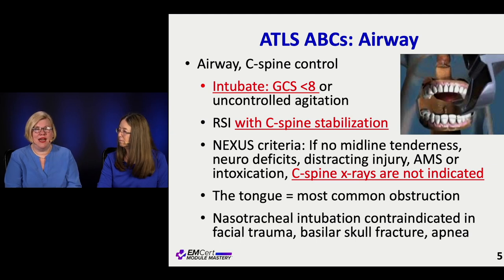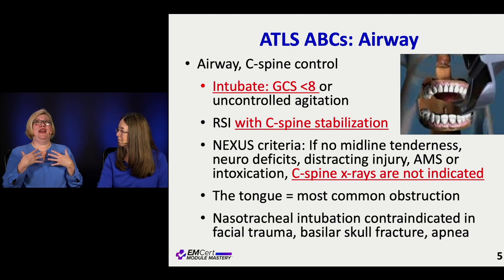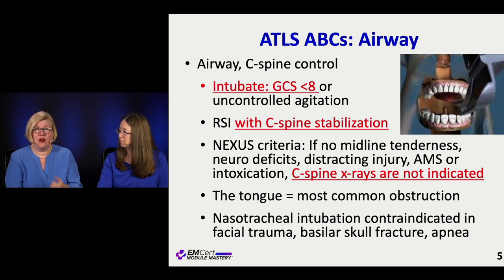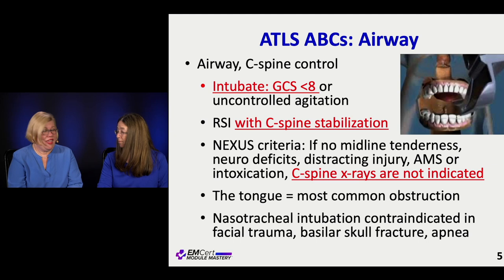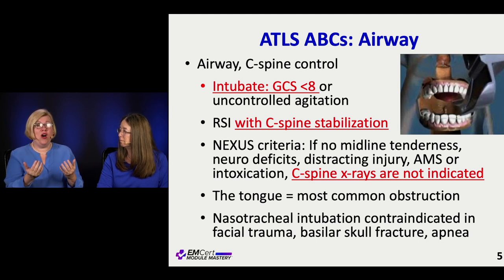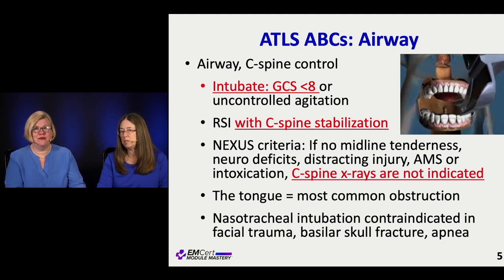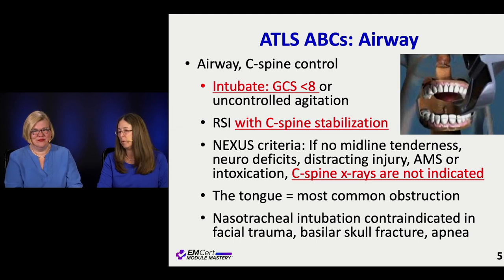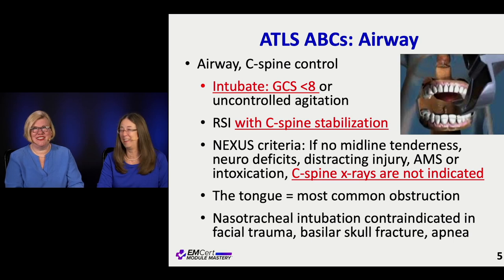The most common obstruction in a traumatic airway is the tongue, because the patient is laying flat in C-spine precautions. If you see an obstructed airway, remember to address that — a jaw-thrust maneuver to reposition things is often all it takes. For nasotracheal intubation in trauma, remember the contraindications: facial trauma, basilar skull fracture, or the patient not breathing at all, because the cords need to be opening and closing. Honestly, with videoscopes and direct laryngoscopy, we just don't do nasotracheal intubation much anymore — especially in trauma.